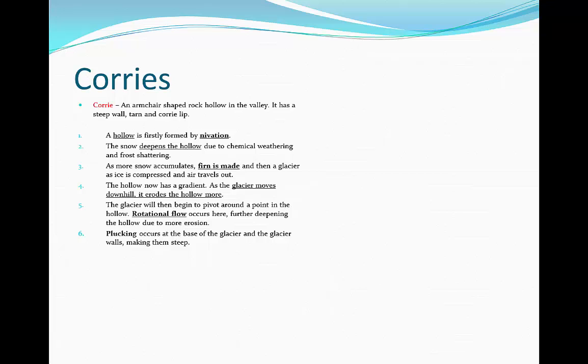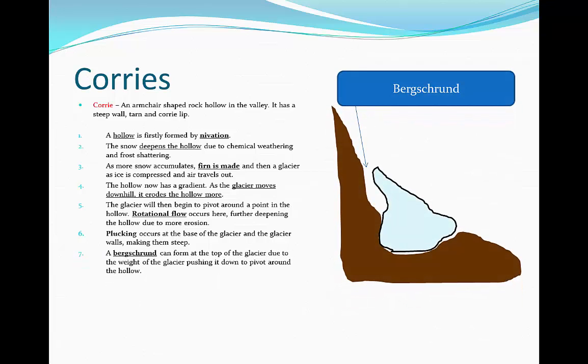Plucking occurs at the base of the glacier and the glacier walls. This makes them steep and we may also get a bergschrund. This forms at the top of the glacier due to the weight of the glacier pushing it down to pivot around the hollow. It's a gap between the steep wall, which has been made steep due to plucking, and the glacier itself.